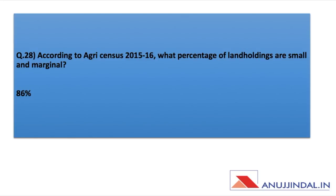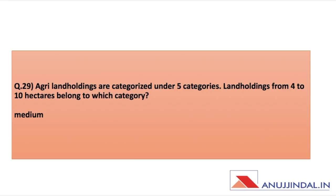According to the Agri Census 2015-16, what percentage of land holdings are small and marginal? It is 86 percent. Agri land holdings are categorized under five categories; land holdings from four to ten hectares belong to which category? This was explicitly discussed in the Agri Census 2015-16 coverage, and the answer is medium.